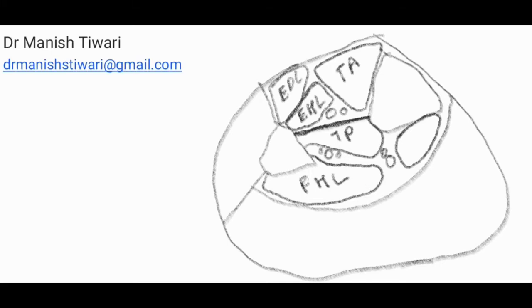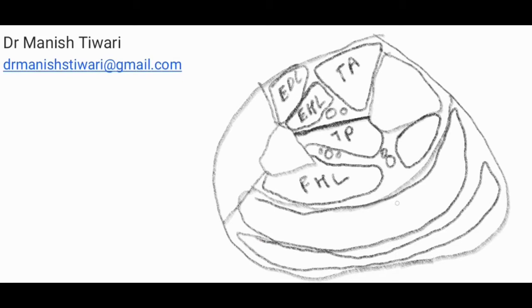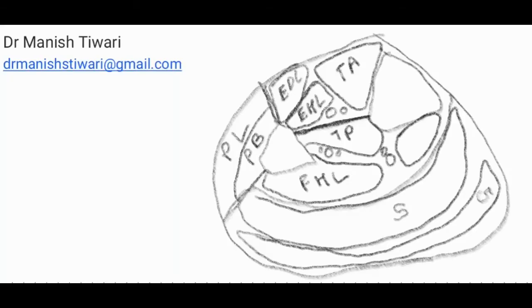That is all about the deep part of the posterior compartment. In the superficial part of the posterior compartment you have two muscles: the soleus muscle and the gastrocnemius muscle. In the lateral compartment you have two muscles: peroneus brevis and peroneus longus. That is all about the muscles and arteries.